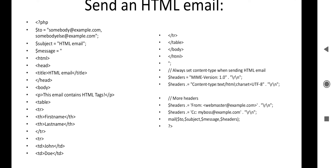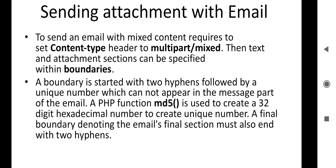Next is sending an attachment with email. To send an email with mixed content, you need to set the Content-Type header to 'multipart/mixed'. Text and attachment sections can be specified within boundaries. You can use the md5() function for encryption to create a unique boundary value. The boundary separates the multiple parts of the message — it begins with two hyphens followed by a unique number that cannot appear in the message body. The PHP md5() function is used to create a 32-digit hexadecimal number.